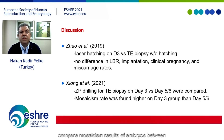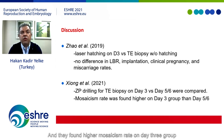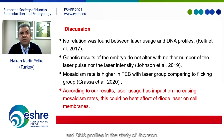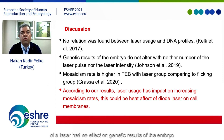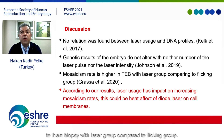Xiong et al. compared mosaicism results of embryos with zona pellucida drilling on day 3 versus day 5 and 6, and found a higher mosaicism rate in the day 3 group. Janssen found no relation between laser usage and DNA profiles, and the number of laser pulses and intensity of laser had no effect on genetic results. But Grasa et al. reported that mosaicism rate is higher in trophectoderm biopsy with laser compared to the flicking group.